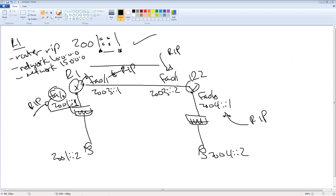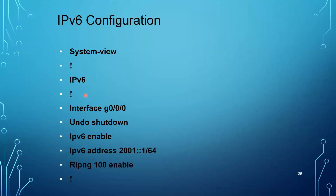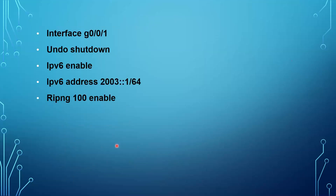After moving to the interface and assigning an IPv6 address, enable the routing protocol with 'ripng 100 enable' — that will enable RIPng on this interface. Move to the second interface — interface GigabitEthernet 0/0/1, undo shutdown, IPv6 enable, give it IPv6 address 2003::1/64, then 'ripng 100 enable'. Do the same for the second router, and the ping should work fine between the two IPv6 devices.